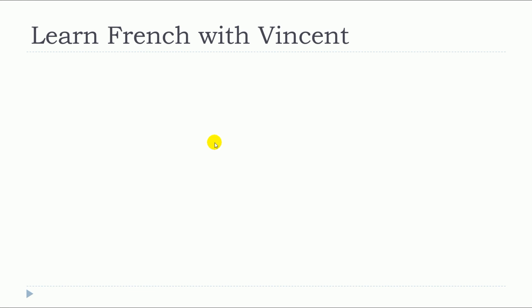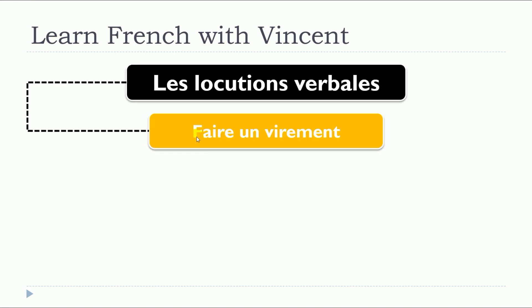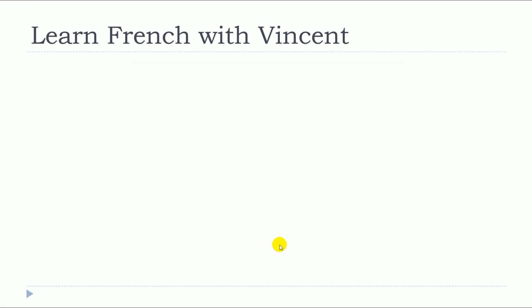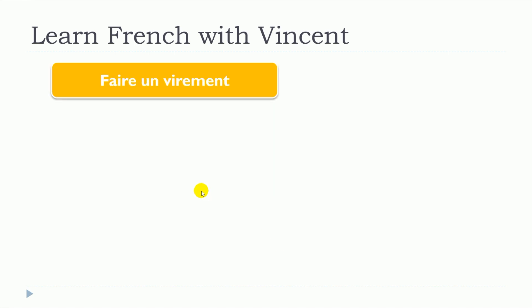This lesson is about faire un virement. The verbal locution faire un virement is translated to 'make a bank transfer' or 'do a bank transfer' in English. We will now see some examples with faire un virement.